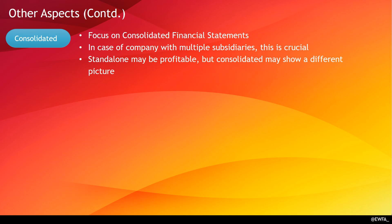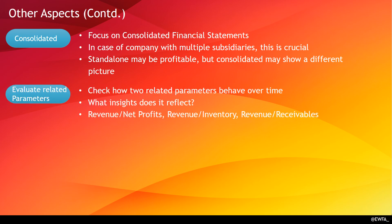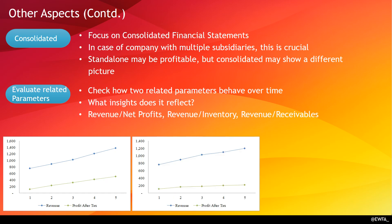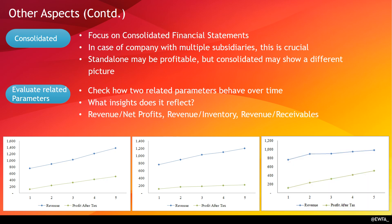Also, evaluate related parameters — check how related parameters behave over time together, as the insights convey a story. This can be done for revenue versus net profits, revenue versus inventory, revenue versus receivables, and many such combinations. For example: if revenue increases and profits also increase, that is straightforward. But if revenue is increasing while profits are not increasing proportionally, it could mean they are achieving higher revenue by offering discounts that are not translating to profits. And if revenue is almost constant but net profits are increasing, ask whether they are raising prices or if input costs are going down. Such insights emerge when you compare two related financial parameters.